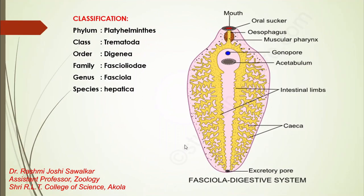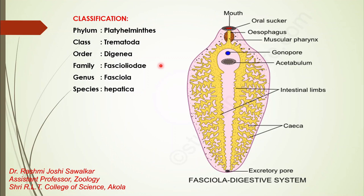First, we will revise the classification which we studied in the previous lecture. Classification: Phylum Platyhelminthes, Class Trematoda, Order Digenea, Family Fasciolidae, Genus Fasciola, Species hepatica. Friends, in a 12-mark question, we have to start our answer with the classification first, then switch to the system we are studying.